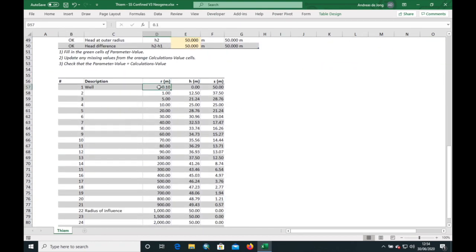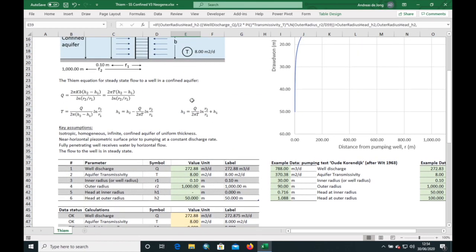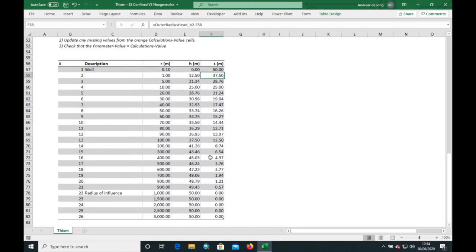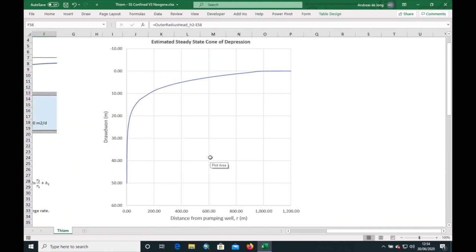We have here a variety of radiuses between our well and the radius of influence, and in this column here will be calculated the h number for each of those locations based on this equation here. From the hydraulic head, we calculate the drawdown. Very simply, it's the difference between the outer radius head and our calculated head. And then these numbers are fed into our chart here.